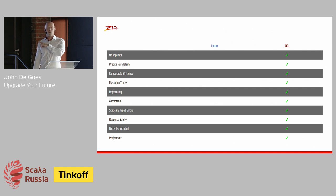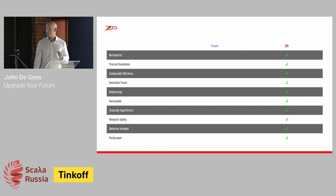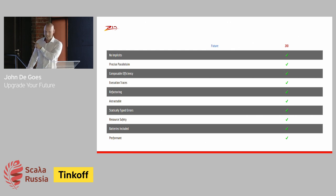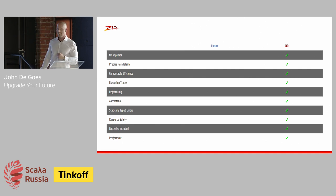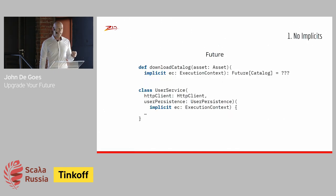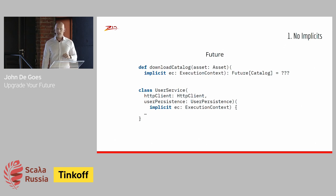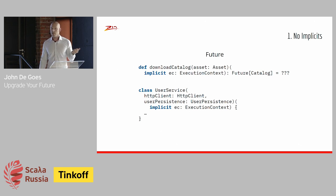I went back and forth on whether to include this comparison chart between Future and ZIO. It seems harmless enough, but I swear this chart will get me banned from some places. The Russian Scala community seems okay with it, so let's dive into a point-for-point comparison between ZIO and Future, looking at concerns that matter to you — stuff you've run into yourself — and seeing how ZIO improves upon Scala Concurrent Future.